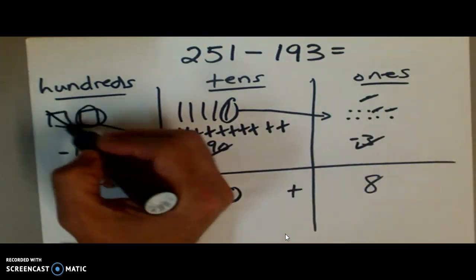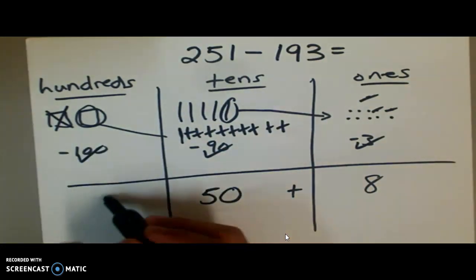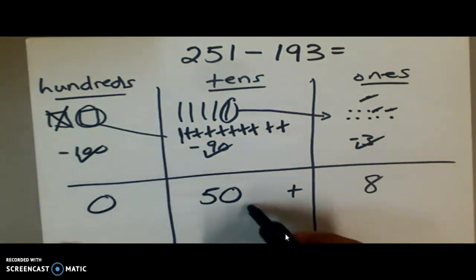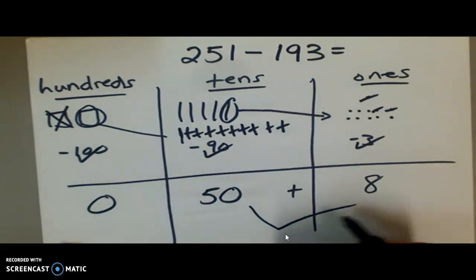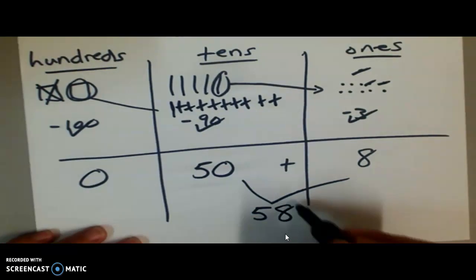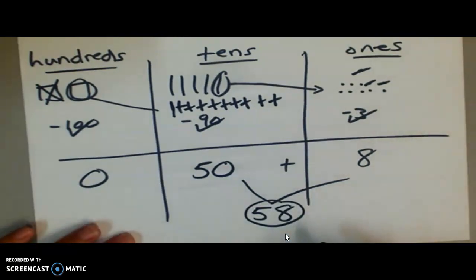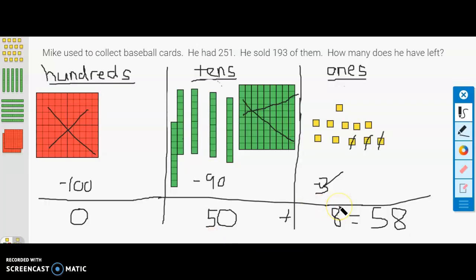That gives us 50 baseball cards here, eight baseball cards here. So we subtract 100, that's gone. Zero hundreds. So we have 50, we have 58, which is exactly what we got with the math app that we've been using. So go back real quick, 58.